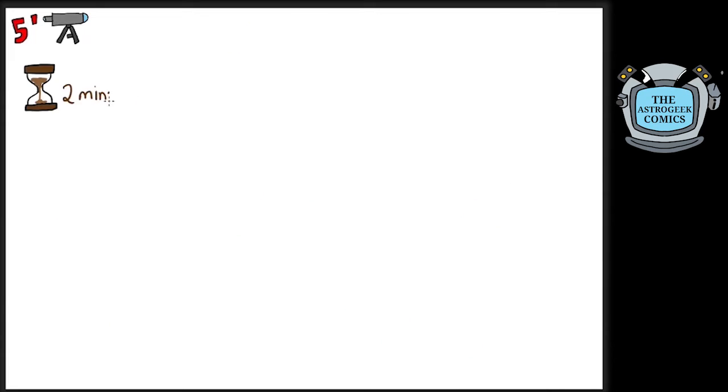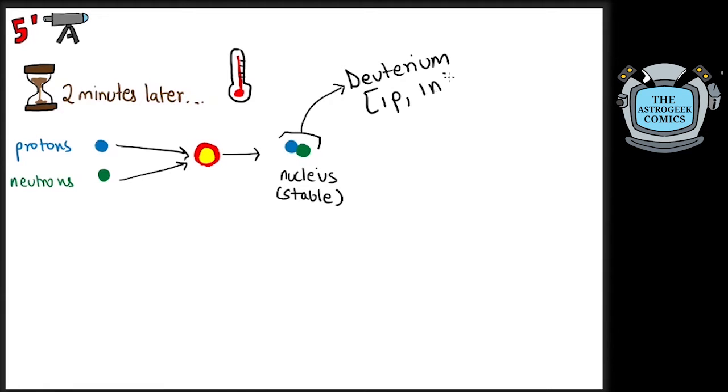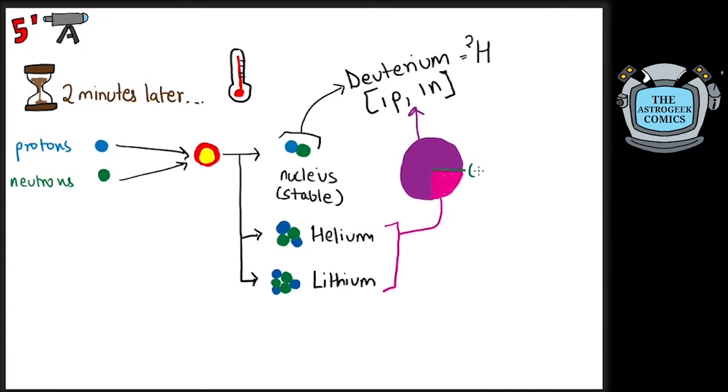Slowly, after 2 minutes or so, temperatures lowered as space kept expanding and the protons and neutrons formed could fuse together to form the simplest nuclei. The most common was deuterium, an isotope of hydrogen with a proton and a neutron. Other nuclei like that of helium and lithium were formed too. Any other elements formed like carbon or oxygen were in virtually negligible quantities.